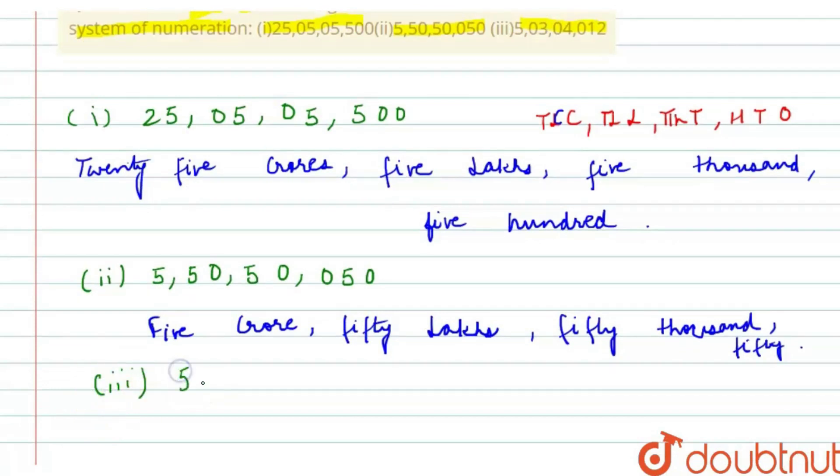It's 55,03,04,012. Let's write it. It's ones, tens, hundreds, thousand, ten thousand, lakh, ten lakh, crore. So it's fifty-five crore,